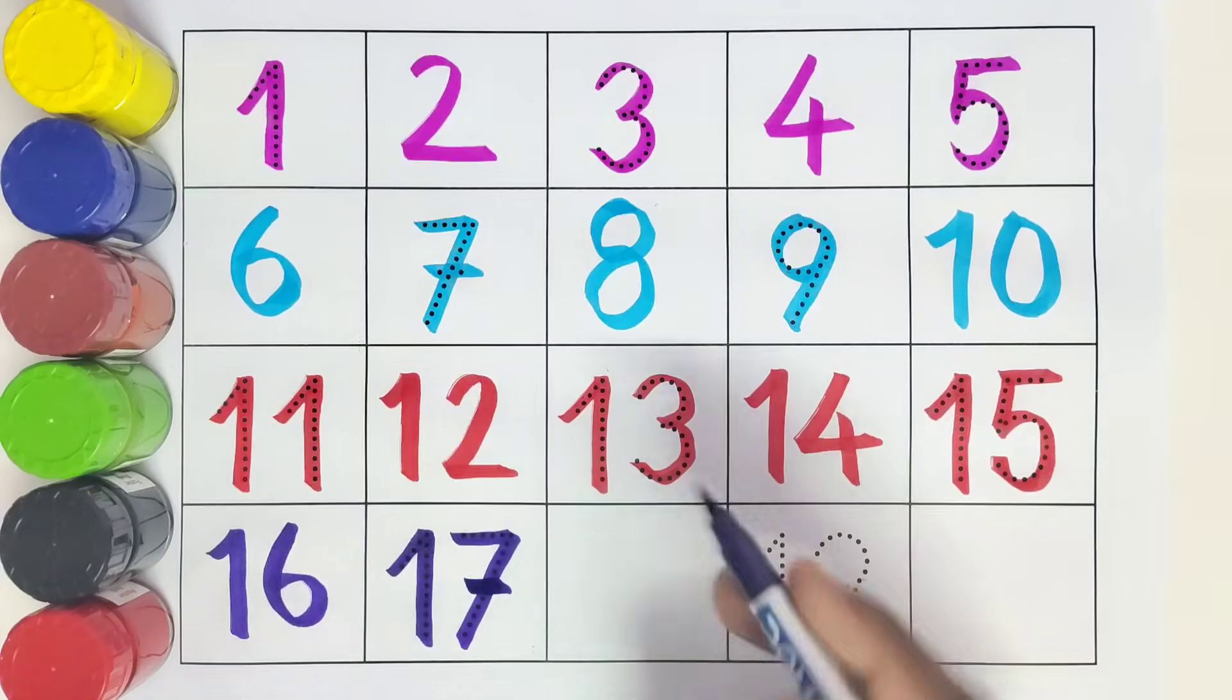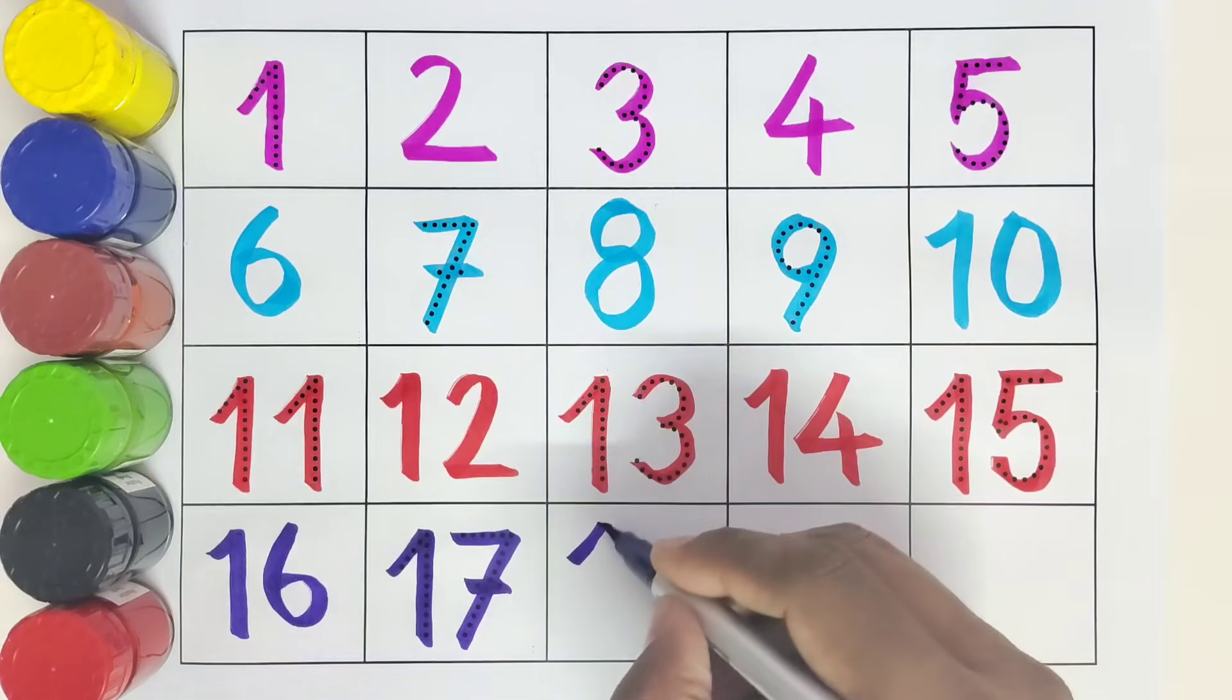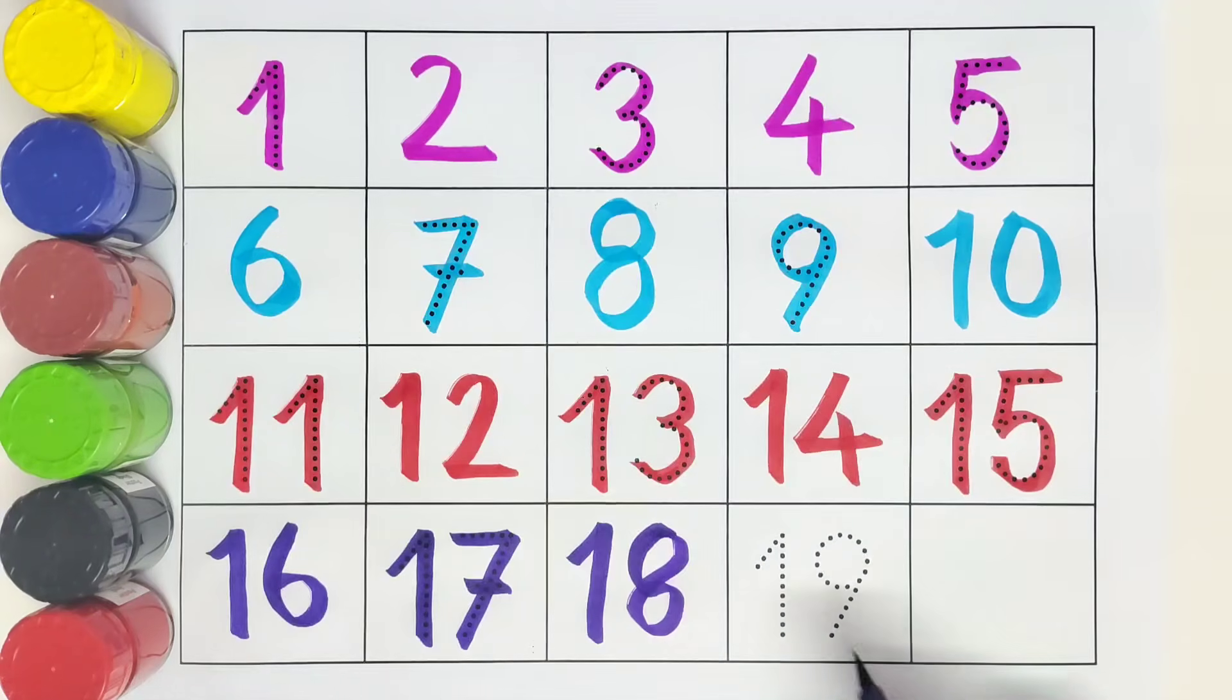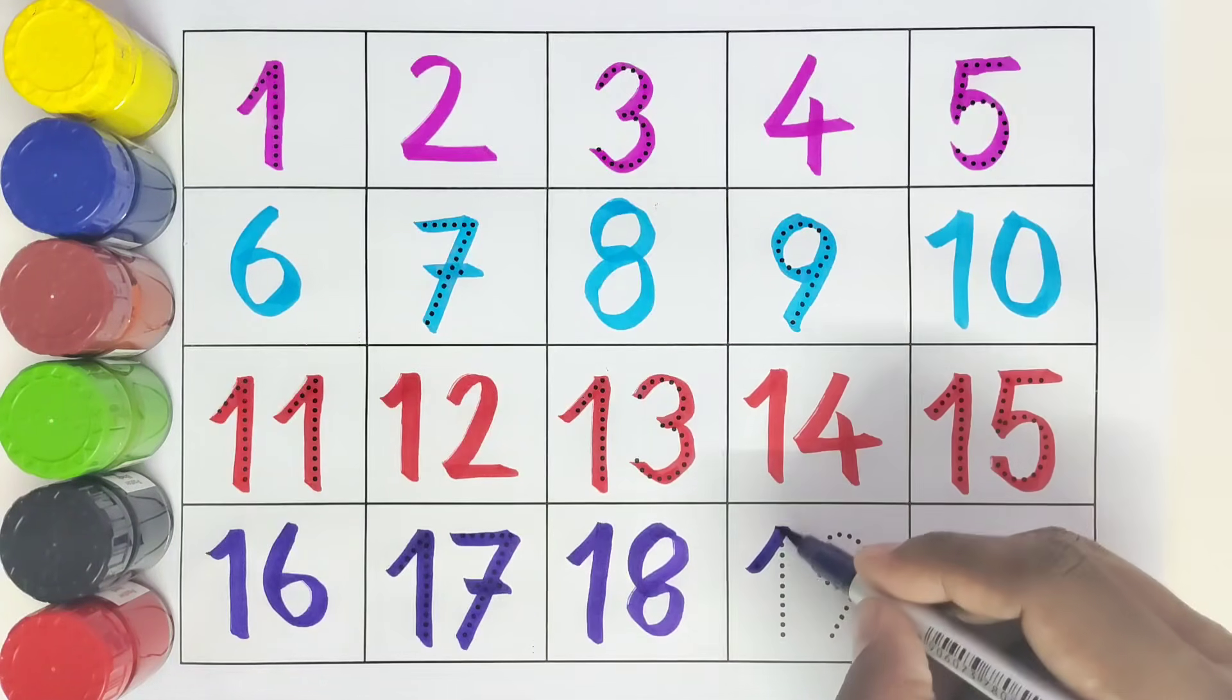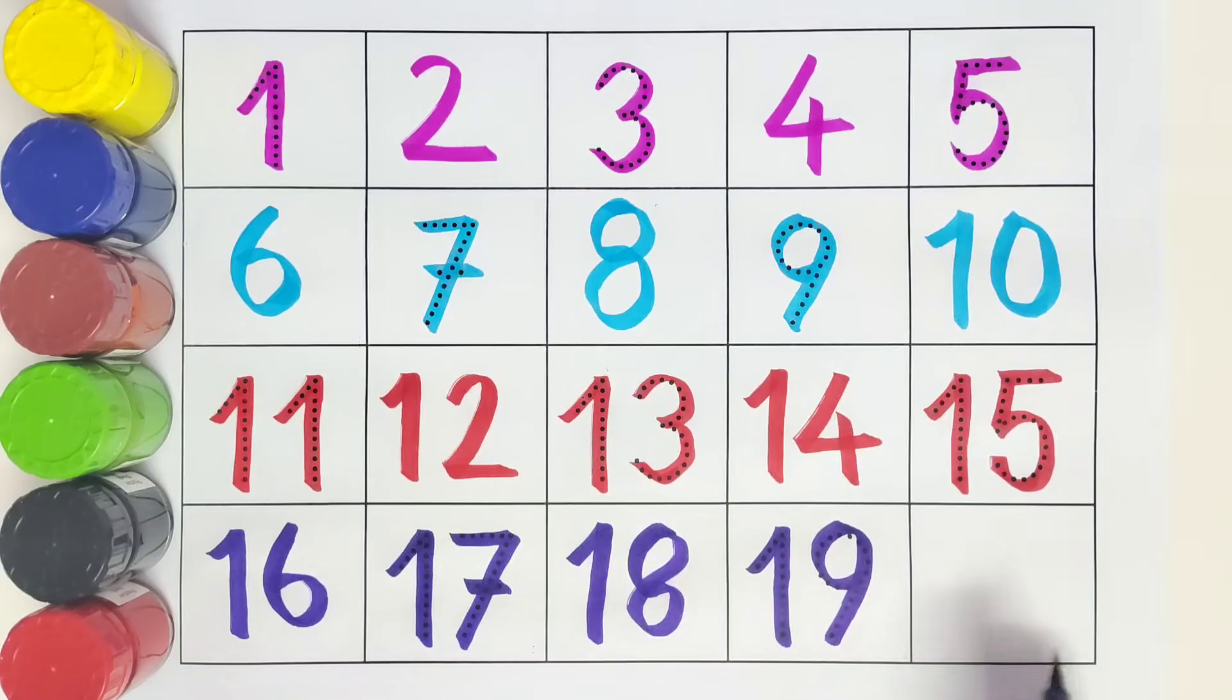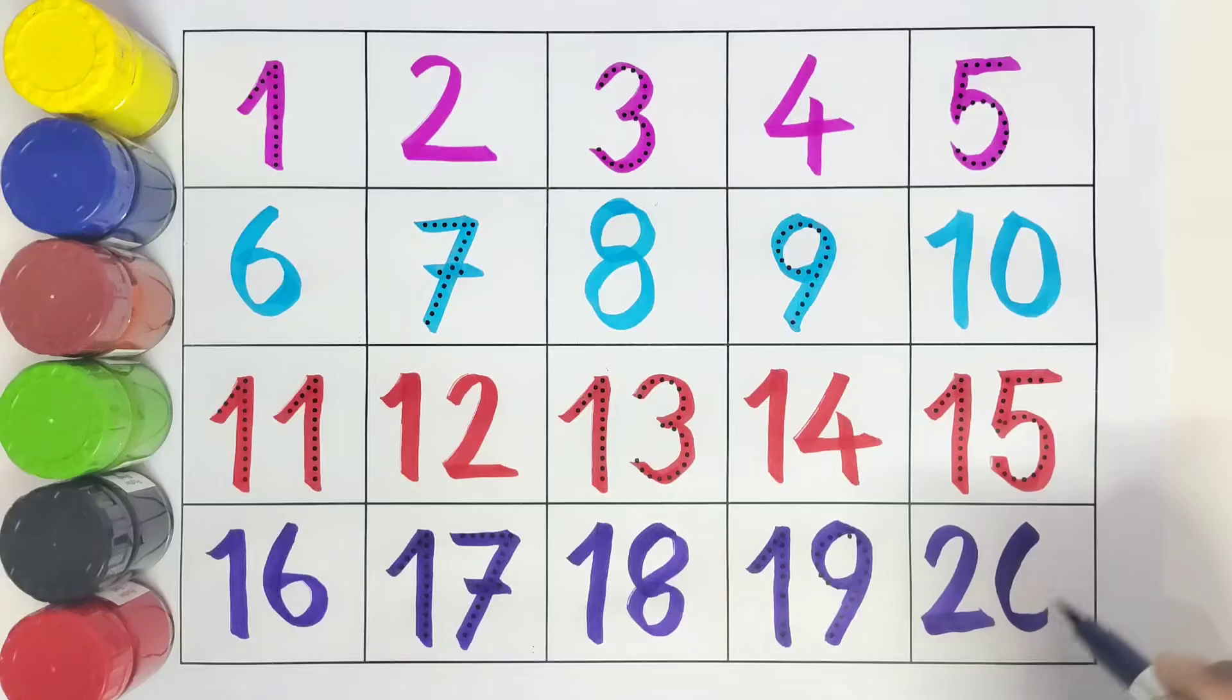This is 17, number 17. This is 18, number 18. This is 19, number 19. What comes after 19? 20, number 20.